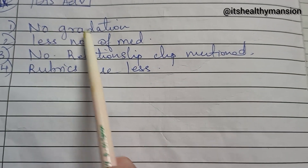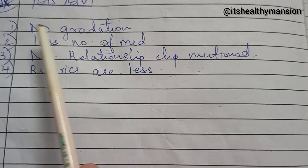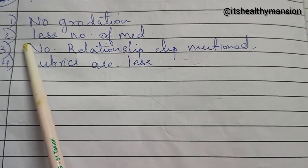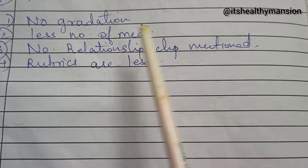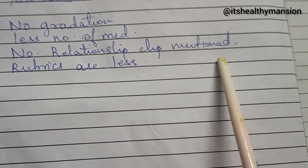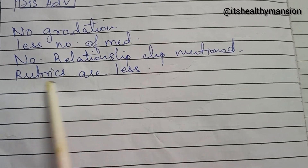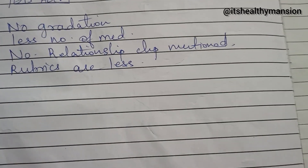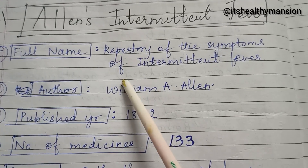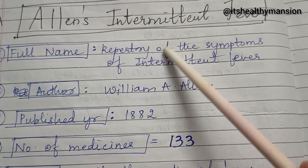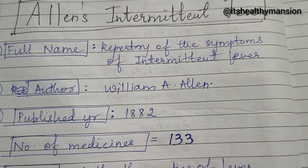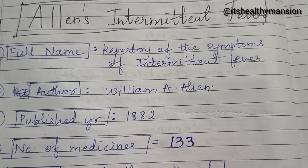The disadvantages of this repertory are: though gradation is given, a less number of medicines are mentioned, no relationship chapter is mentioned, and rubrics are also less. For the advantages, you can write all the key features of Allen's Intermittent Fever.